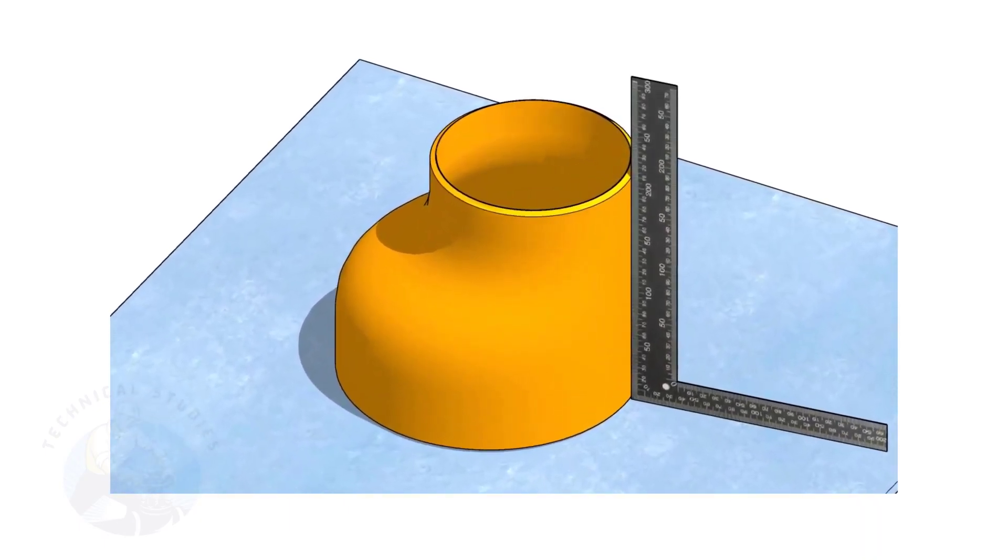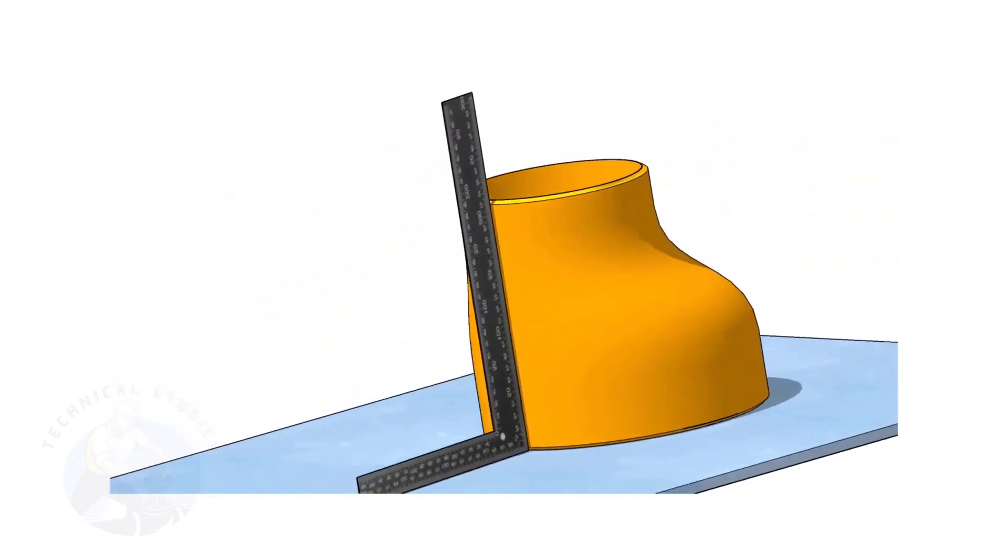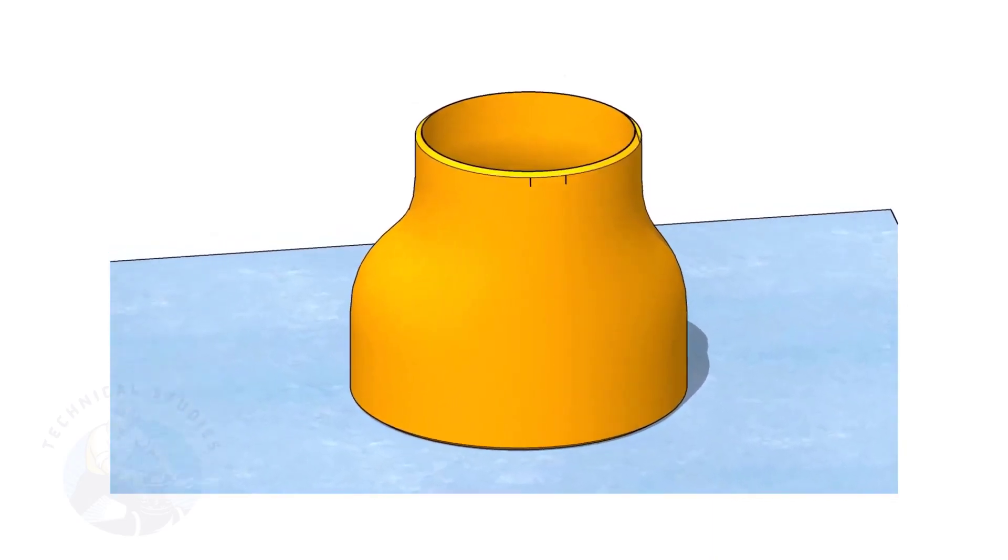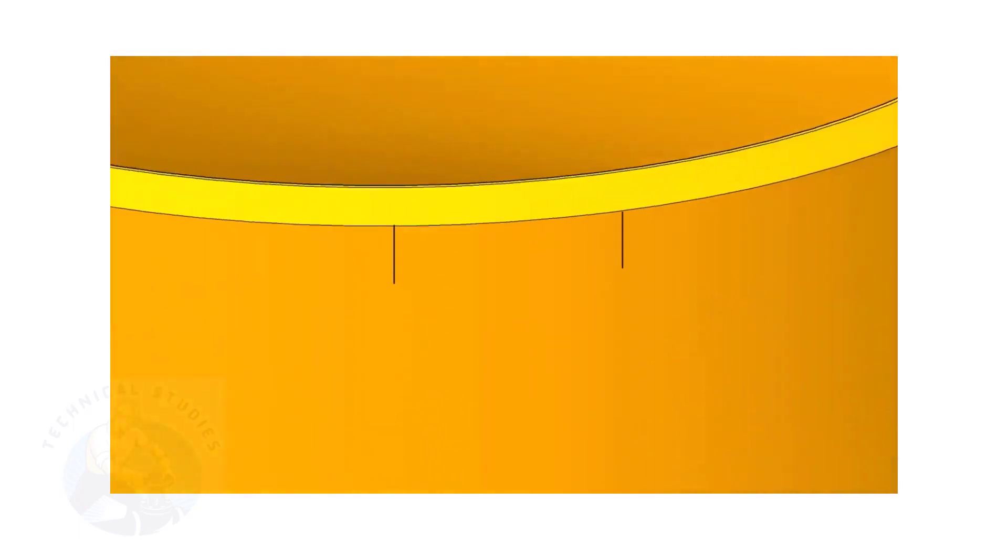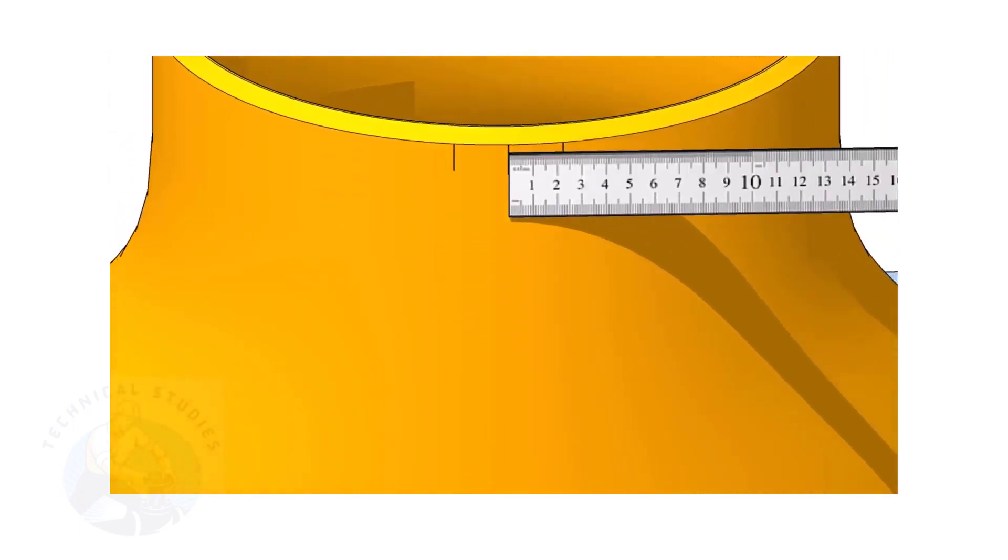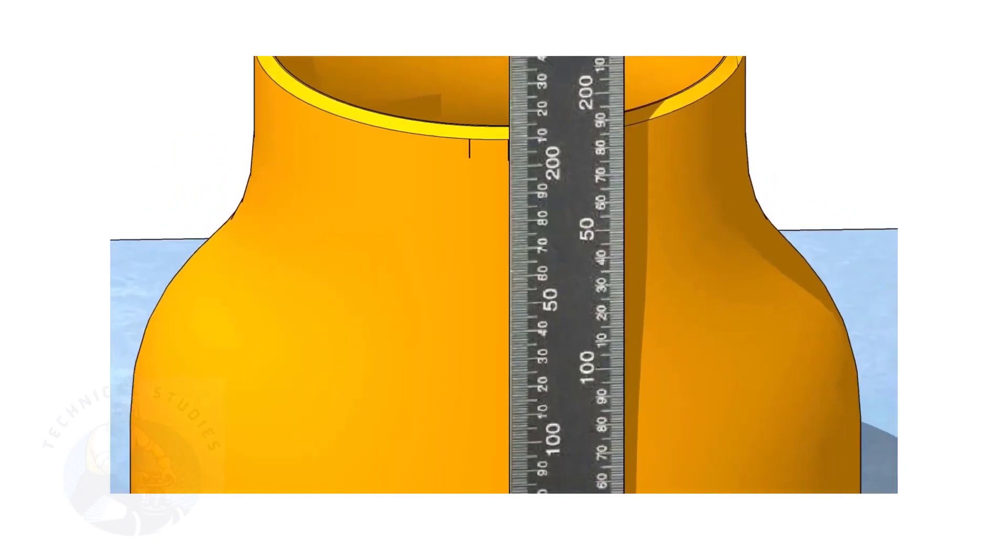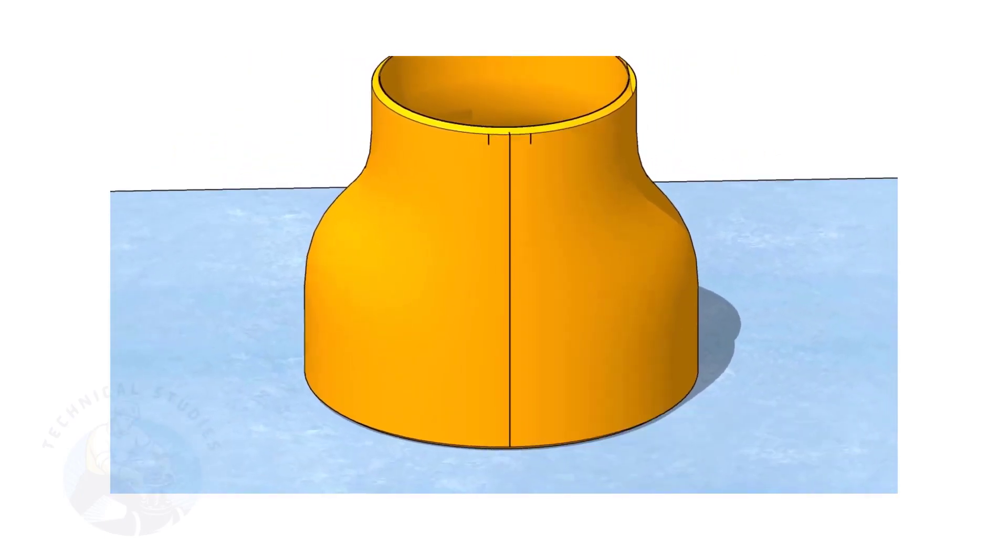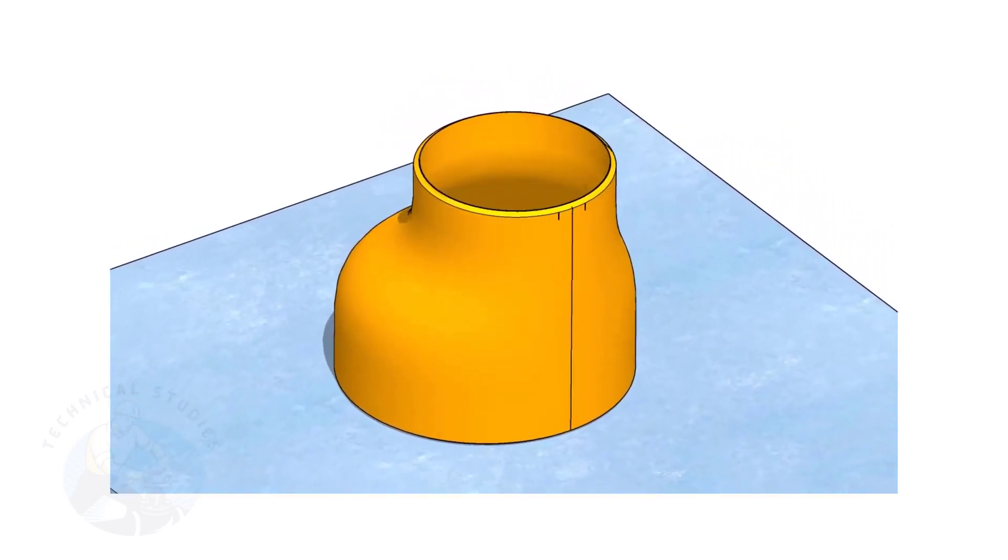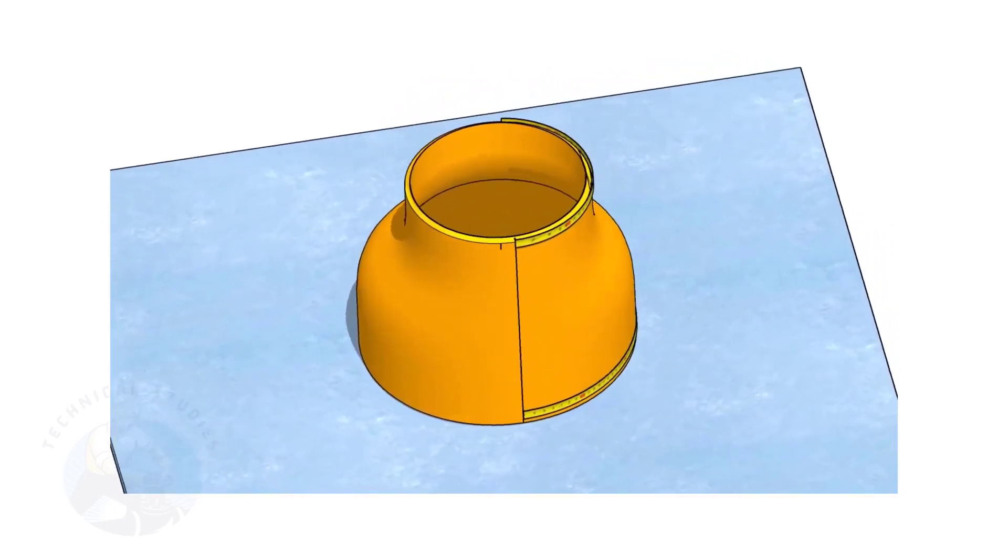It is a good practice marking the center lines of the fittings before starting the fit up, especially an eccentric reducer. I have already posted videos on how to mark the center lines of an eccentric reducer in different methods. In this video, I will show you the method of fitting an eccentric reducer to a pipe that is already fitted to a flange. But this method is applicable for all the fittings.